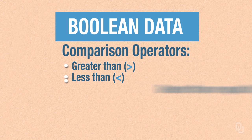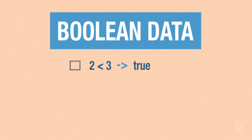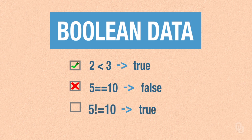Boolean data is created mostly by operators like greater than or less than, greater than or equal to, equal and not equal. Now equal is a little bit different in Java than it is in math — it's two equal signs put together, and not equal is an exclamation point followed by an equal sign. For example, 2 less than 3 has the value true. 5 == 10 is false. 5 != 10 is true because 5 and 10aren't the same.